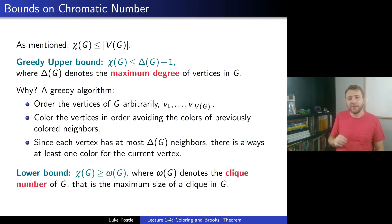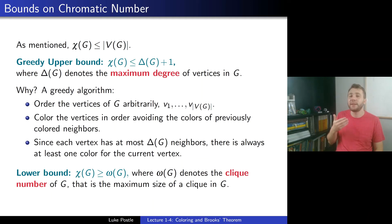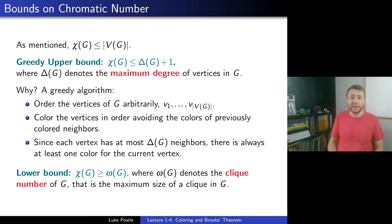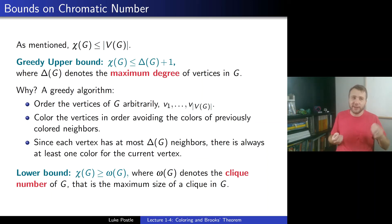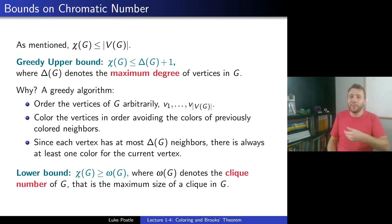For a lower bound, chi(G) is at least omega(G), the clique number of G — the maximum size of a complete subgraph. This is an obvious lower bound: in any clique, every pair of vertices is adjacent, so each vertex in the clique needs a distinct color. The chromatic number of G is always at least the chromatic number of any subgraph. So we have a nice greedy upper bound and a natural lower bound from the clique number. Note that the clique number itself is a hard parameter to compute, but these two bounds are natural starting points.